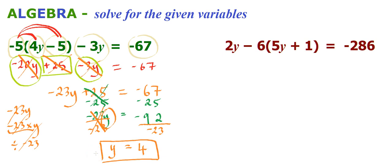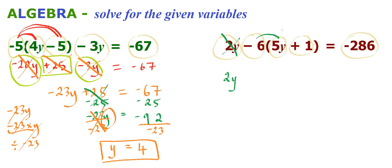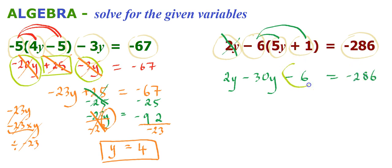For the second one, let's identify the terms. We've got positive 2y, minus 6, positive 1, positive 5y, and minus 268. We can bring this 2y straight down because it is not attached to anything else. That leaves us with minus 6 to multiply by each of the terms inside the brackets. So minus 6 times 5y gives us minus 30y, and minus 6 times positive 1 gives minus 6. The right-hand side has not been touched yet.